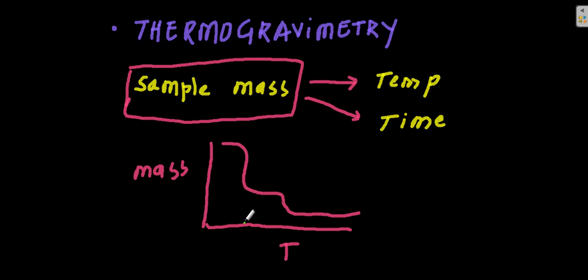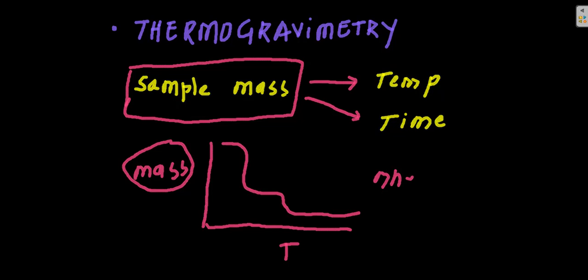In order to measure this change in mass of a certain substance with respect to temperature, the instrument used is commonly referred to as a thermobalance. It is a specific kind of balance used to determine the change in mass of a given substance.